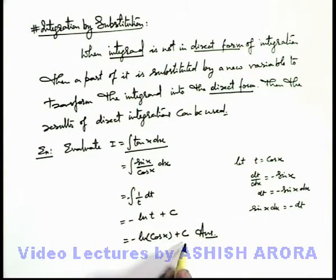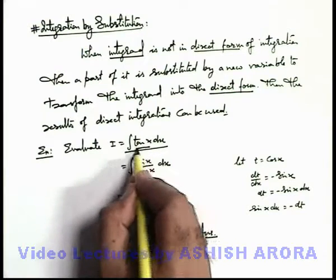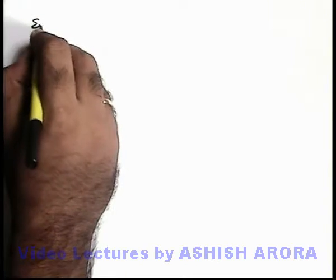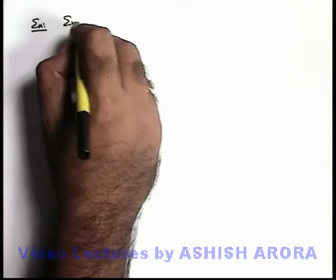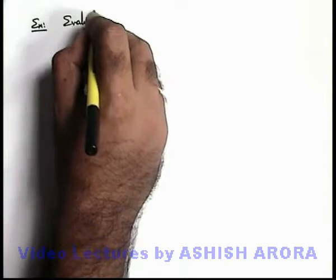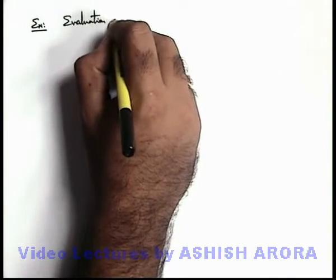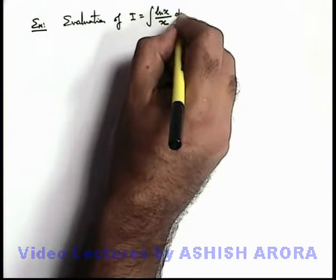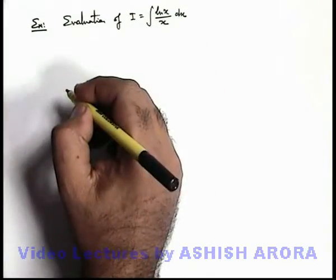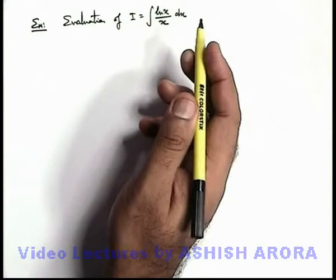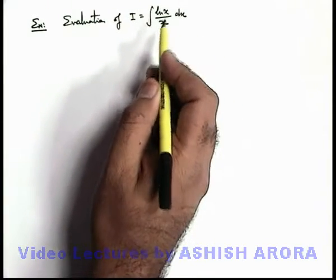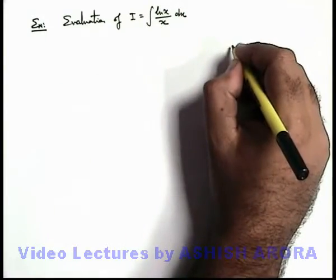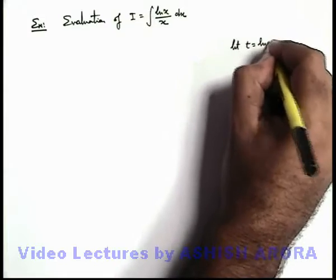If you wish, just differentiate this expression and see whether you are getting the integrand tan(x) or not. Let's see one more example: evaluate I which is integration of ln(x) by x dx. We need to evaluate this. Directly we can't integrate it, and we don't have any direct quotient rule using which we can integrate the result. Here we substitute a part — let t equal to ln(x).